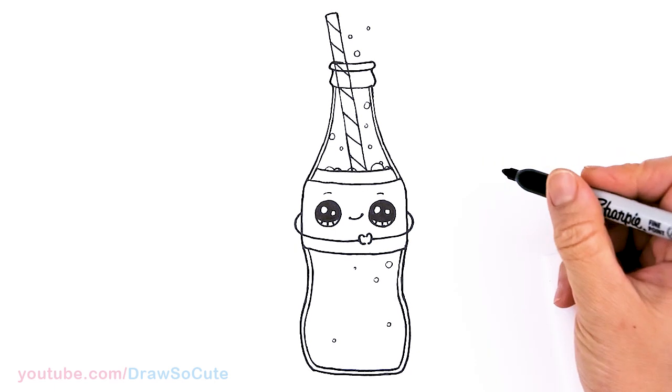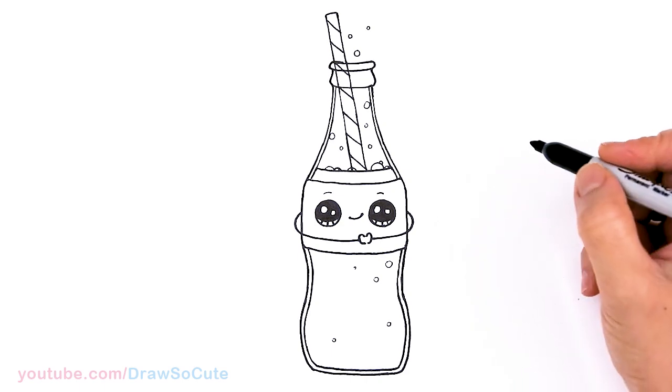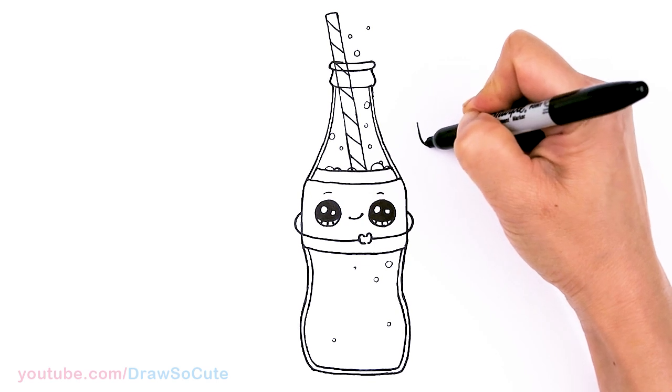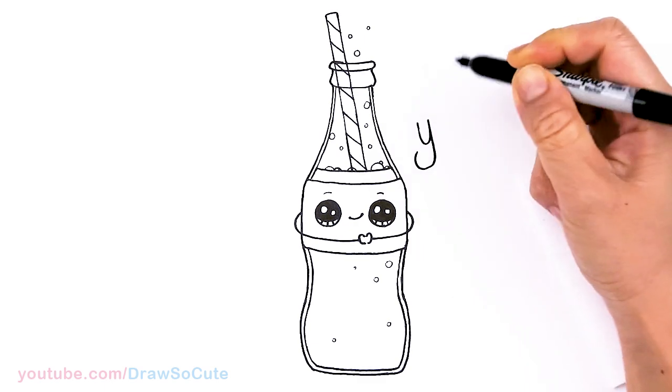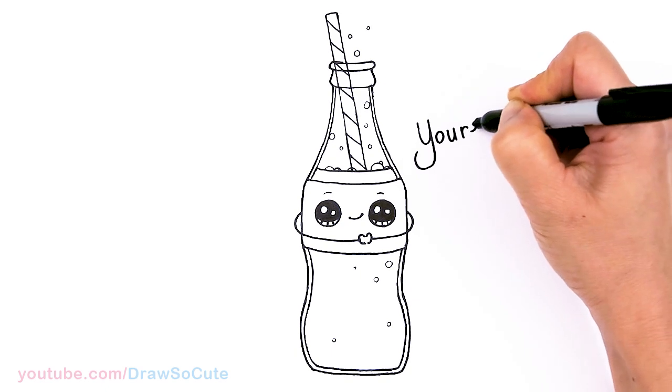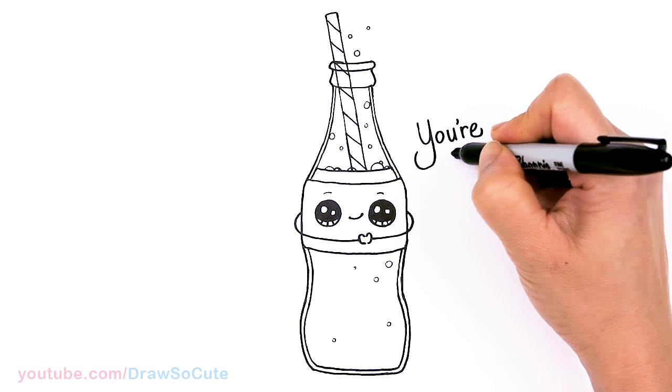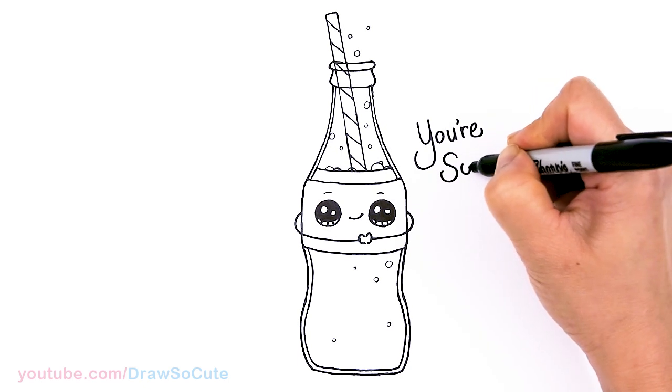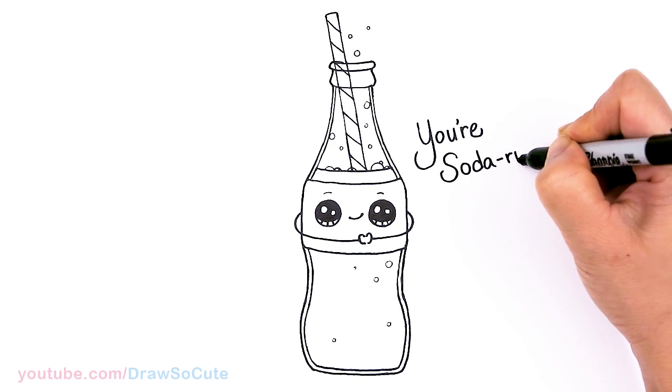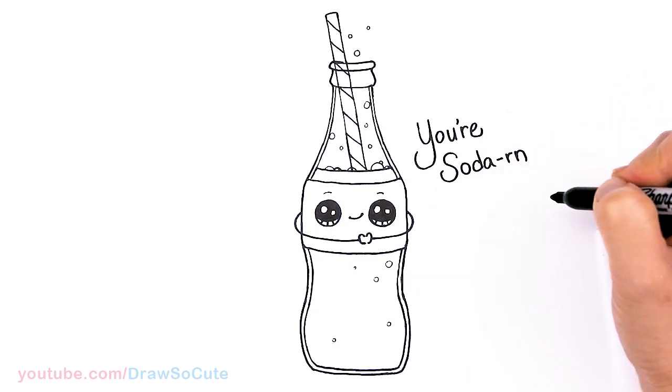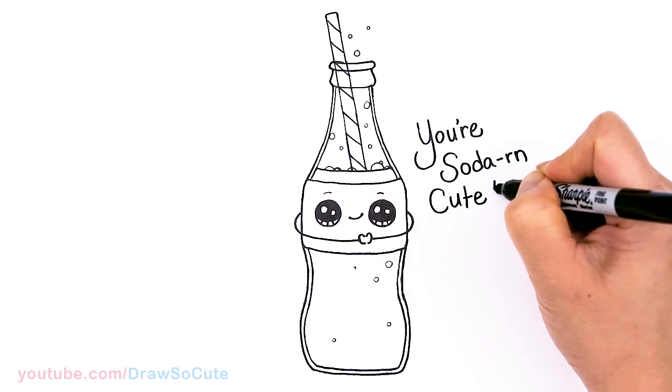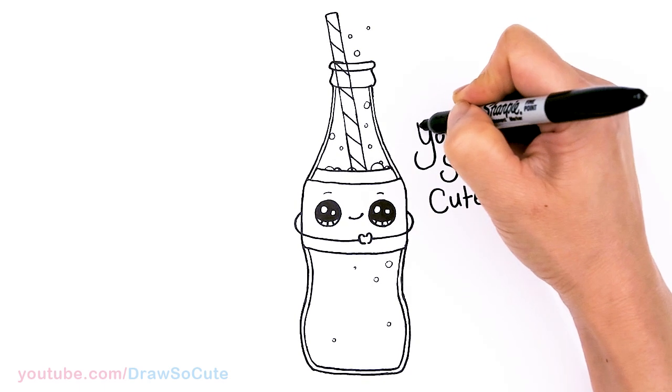And that is pretty much it for the drawing part. So let's go ahead and I'm going to write the pun. Which is you're so darn cute. So let's come right here and right next to it. I'm just going to go ahead and write this out. Here and then so dash R N and cute of course. So let's add it right here. And an exclamation mark. And I'll come in here and thicken everything up.